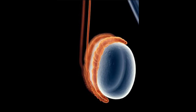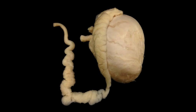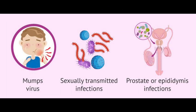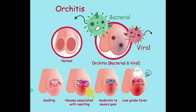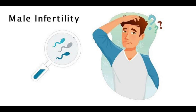Untreated patients develop complications such as scrotal abscess and pyocele. Severe infection can lead to testicular death. If infection continues after six to eight weeks, it becomes chronic. It is important to start treatment early to prevent complications. If the patient is cured early from the disease without any complications, there can be no effect on sperm counts.